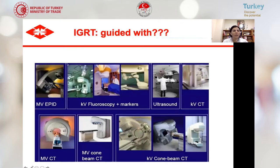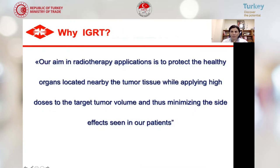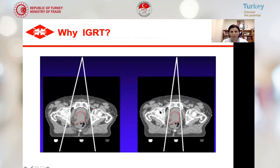IGRT image-guided radiotherapy can be guided with EPID devices, fluoroscopy, ultrasound, cone-beam CT, and kV CT, but the most important modality is MR-guided IGRT. The first MR-guided radiation treatment was reported in 2014. Our aim during radiotherapy is to protect healthy organs nearby while applying higher doses to the target volume, minimizing side effects. Why IGRT? Consider prostate tissue — if you perform conventional radiotherapy, you need more margins to treat the true volume. But with IGRT, you can narrow your treatment margins because you can see where the tumor is during treatment.